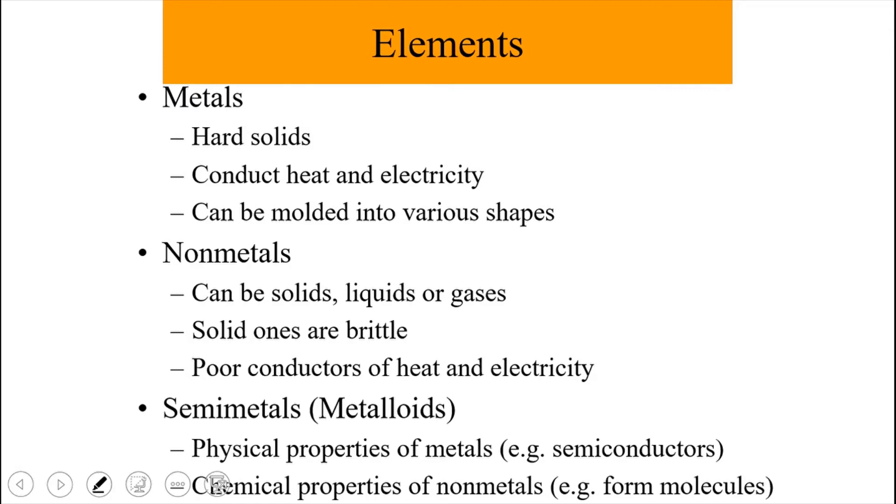And then the semi-metals, also called metalloids, have the property that they physically behave like metals. They're usually good semiconductors of electricity, but they have chemical properties like those of non-metals, in that when they form compounds, many times they form molecules.